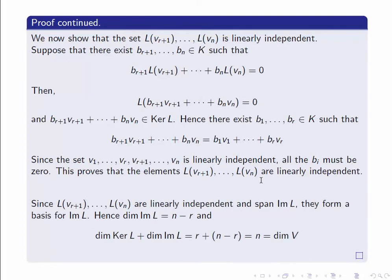So we've proved this set is linearly independent and that it spans the image, so it forms a basis for the image of L. The dimension of the image of L is N minus R, and so the dimension of the kernel plus the dimension of the image equals R plus N minus R, which equals N — the dimension of V. We've proved the Rank Nullity Theorem. Now you should close out of the video, sit down, and rewrite this proof for yourself. You'll find it's very easy, and once you've done it once or twice, you'll probably never forget it. Thanks for listening, and join me again soon for another discussion of abstract linear algebra.